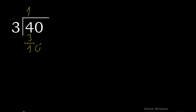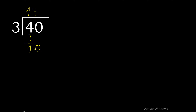Remainder 0. Bring down to get 10. With 10: 3 multiplied by 4 is 12 — excessive. Multiplied by 3 is 9. 10 minus 9 is 1.